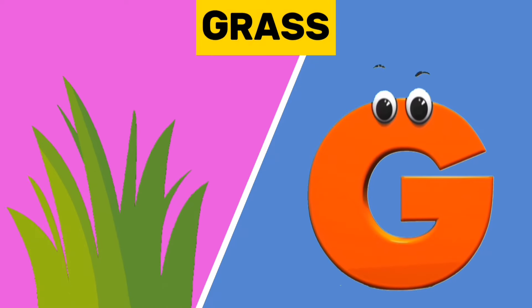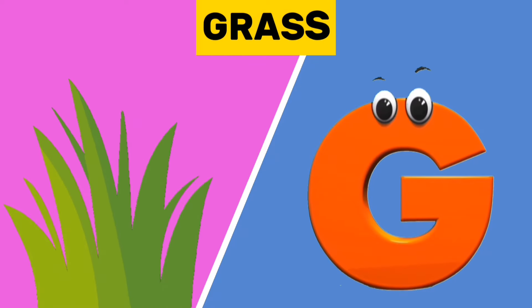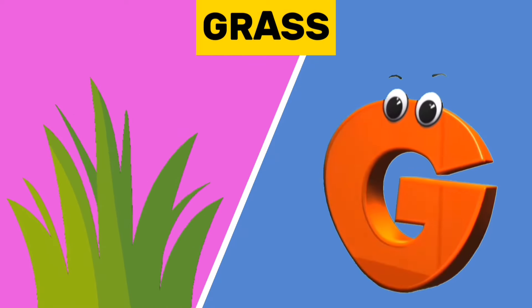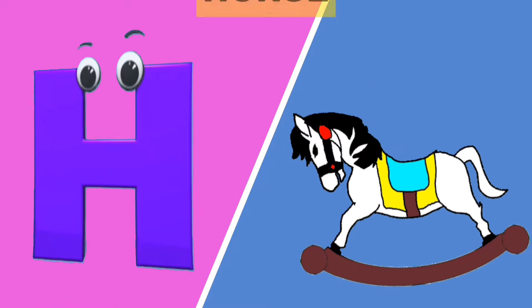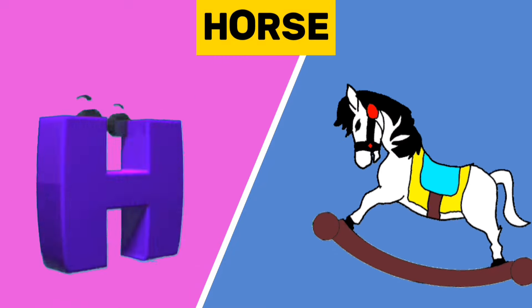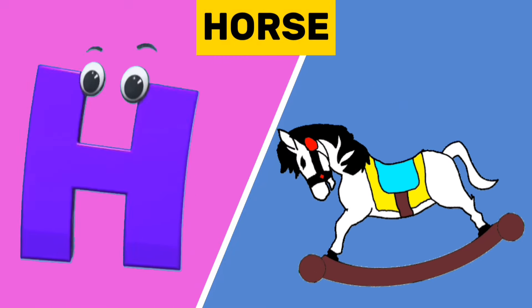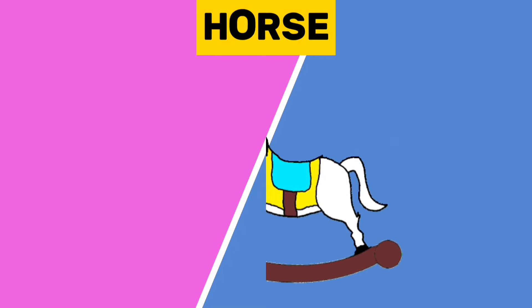G is for grass. G, g, grass. H is for horse. H, h, horse.